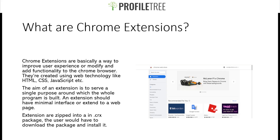The aim of an extension is to serve a single purpose around which the whole program is built. An extension should have a minimal interface or extend to a web page — it's basically just meant to improve the user experience. Extensions are zipped into a CRX package, so the user would have to download and install that package.